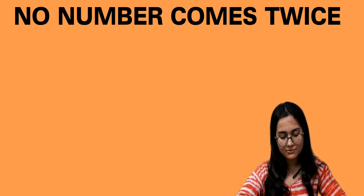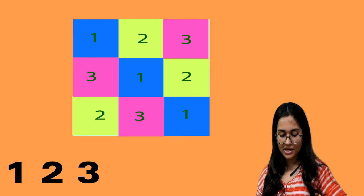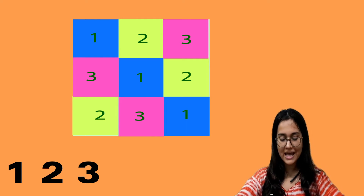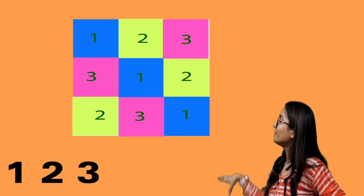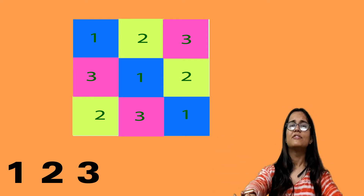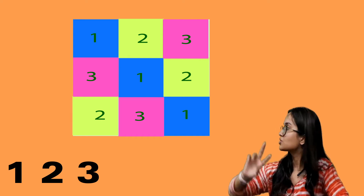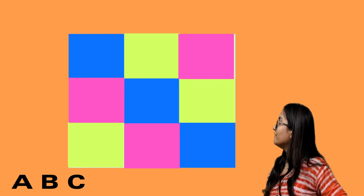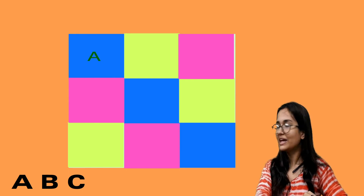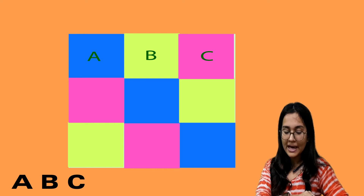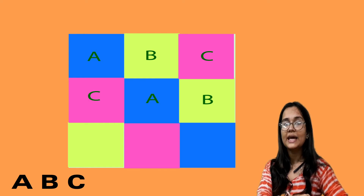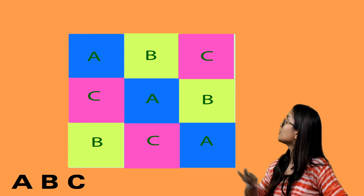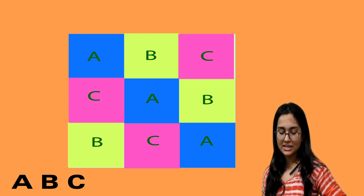Then there is an activity where no number comes twice in any one line. A box uses numbers 1, 2, 3 and no single number appears twice in one single line or column. The same rule applies to letters: if the letters are A, B, C, then in the first column we can have A, B, C; the second column C, A, B; and the last column B, C, A — so no letter is repeated in any single line.